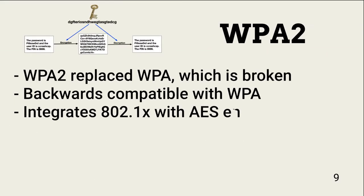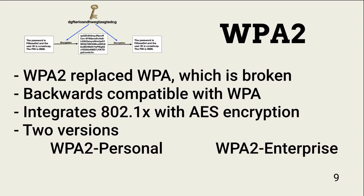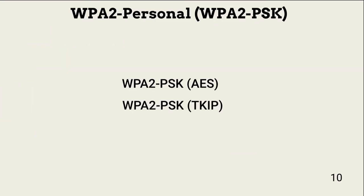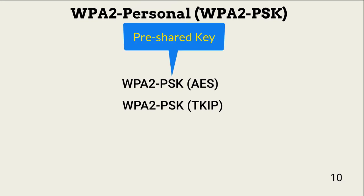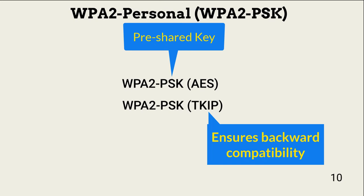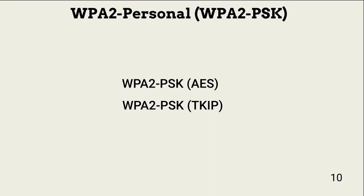WPA-2 replaced and is backward compatible with WPA. It integrates IEEE 802.1x with AES encryption. WPA-2 comes in two versions: WPA-2 Personal and WPA-2 Enterprise. WPA-2 Personal, also known as WPA-2-PSK, can be implemented with AES or TKIP. PSK stands for Pre-Shared Key. TKIP implementations are backward compatible with older devices that do not support AES. However, AES is considered more secure and is the default implementation when using WPA-2.